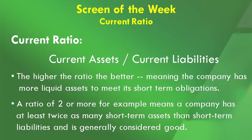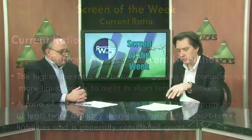A ratio of two or more means the company has at least twice as many short-term assets than short-term liabilities and is generally considered to be good. Looking at the current ratio right now for stocks in the S&P, it's at 1.79. It's off a little from Q3 of last year when it got as high as 1.91, almost reaching that two threshold, but it's also nicely off the lows from earlier last year.